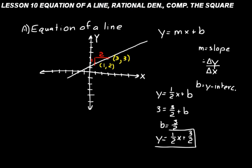So our equation is y equals one-half x plus three-halves. That's the equation of that line. That's what analytical geometry is about — making equations of geometric curves so we can analyze that line in detail. This is the first of many lessons on analytical geometry; about 30 lessons, around a fourth of the book, deal with it.